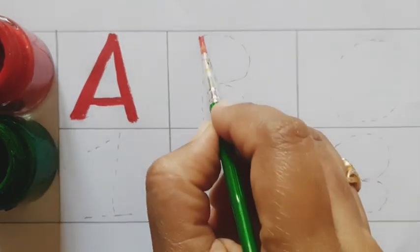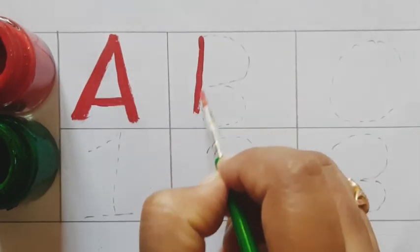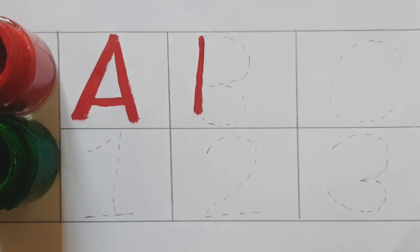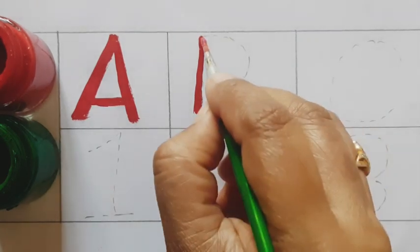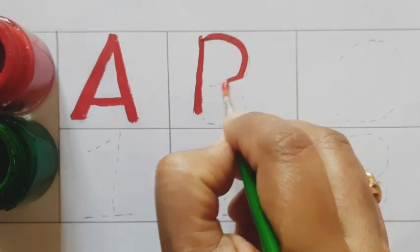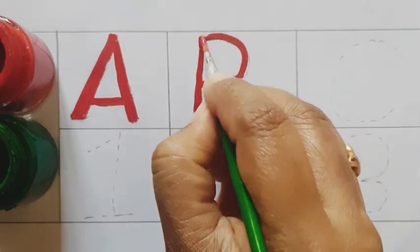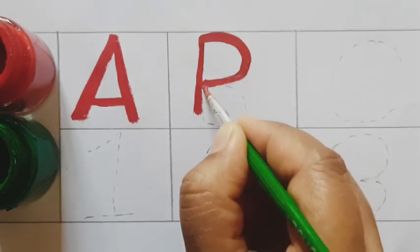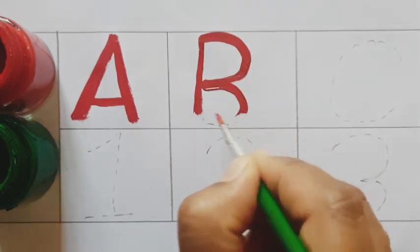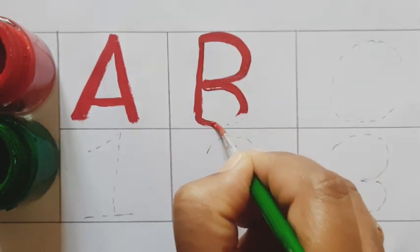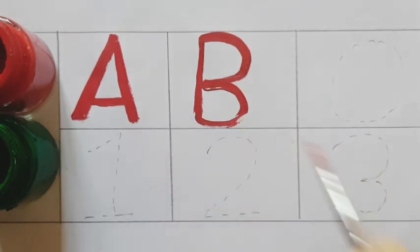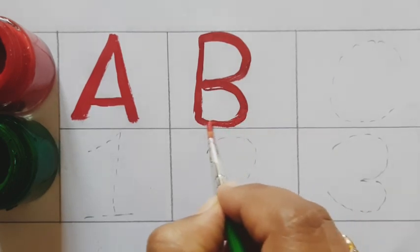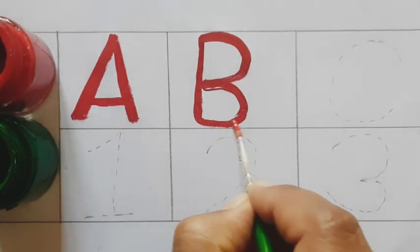B. B for banana. B for ball. B for basket. Capital B. Red color.